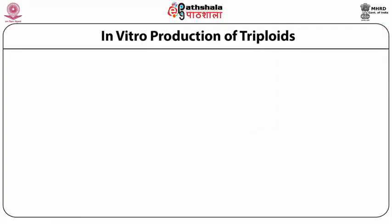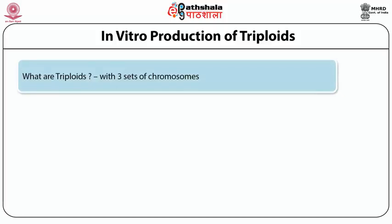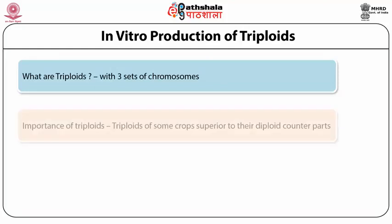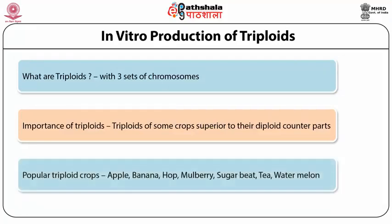Let's first understand what triploids are. Triploids are plants with three sets of chromosomes. They are very important in genetics and plant breeding. Some triploid plants or crops are superior to their diploid counterparts. For example, you have apple, banana, hop, mulberry, sugar beet, tea, watermelon, etc., which are already in commercial use.